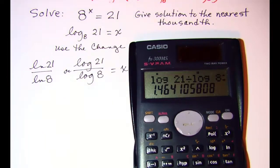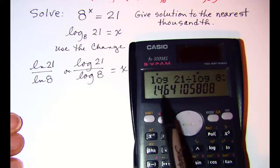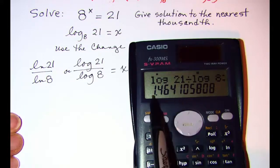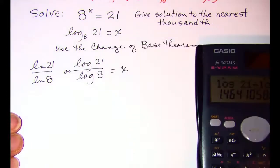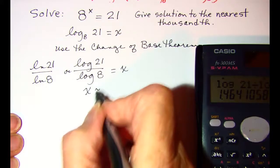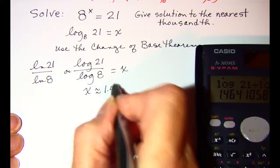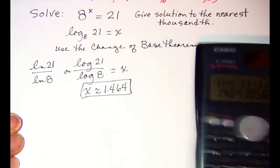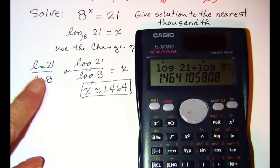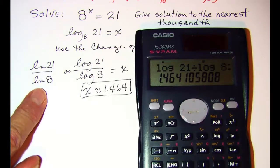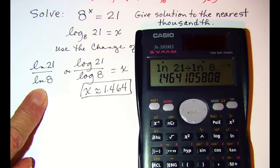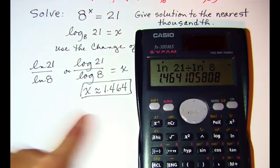And we get to the nearest thousandth, it means we have to round behind the 4, so 1.464. Now let me just show you with ln this expression, ln of 21 divided by ln 8. We get the same value.